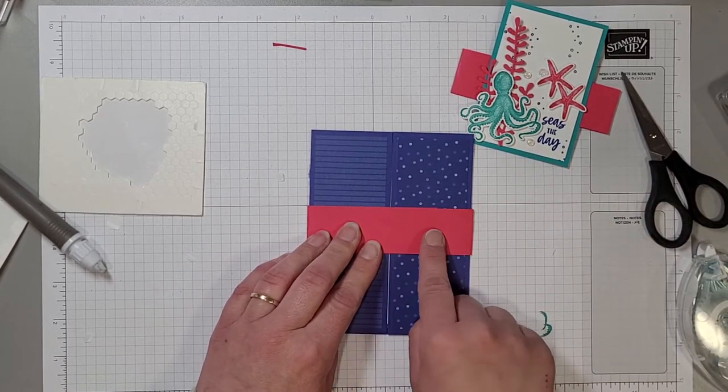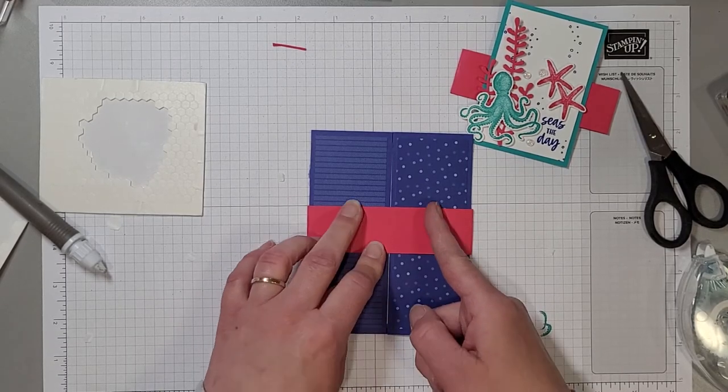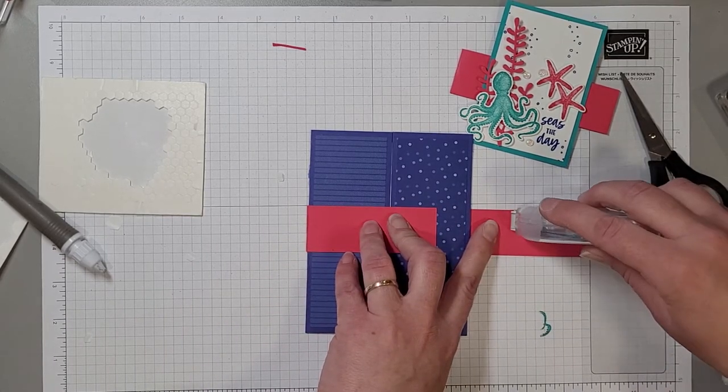So you can go ahead if you choose and you can trim some of this off to make this less or you can just go with it and put your adhesive in between these two edges. So I'm going to do that, I'm just going to leave mine as is, I'm going to put adhesive here and here.